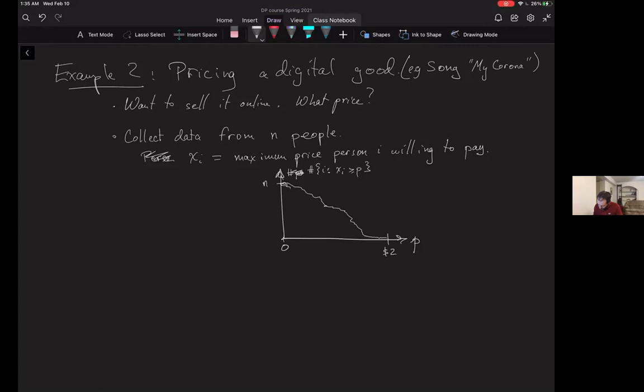Your goal is to find a price at which to sell this product. For example, you might choose this price. If you choose this price, the amount of money you'll make is the price you're charging times the number of people who pay that price. It's the area of this rectangle. The quality of a price, assuming you sell to these people and they pay what they say, the revenue you make is P times the count of people such that Xi is at least P.